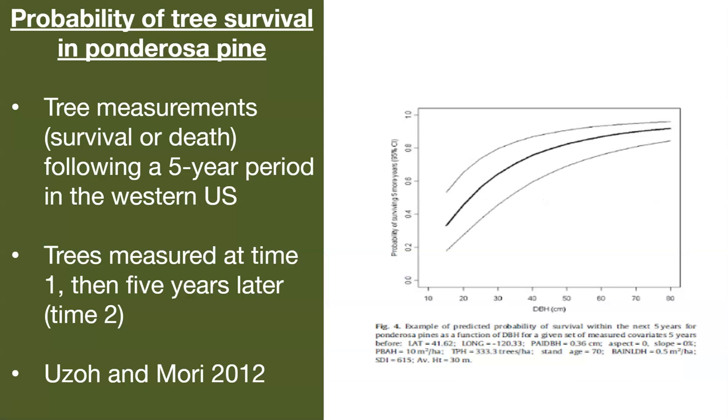So what's an example? In this example, we're looking at the probability of tree survival, and this is for ponderosa pine. And so what they've done, these researchers have taken tree measurements, and they measure whether or not trees survived or died following a five-year period in the western United States. And so what happened was that the trees were measured at time one, and then they measure them five years later at time two. So there's a link to this paper in the notes. But in general, they used logistic regression to try to predict the survival of these ponderosa pine trees.